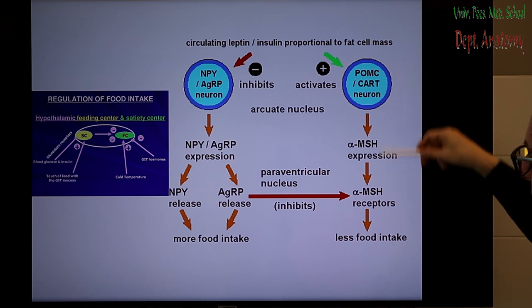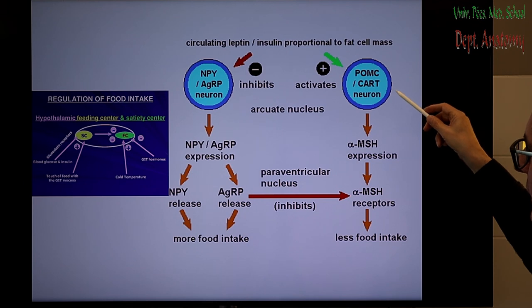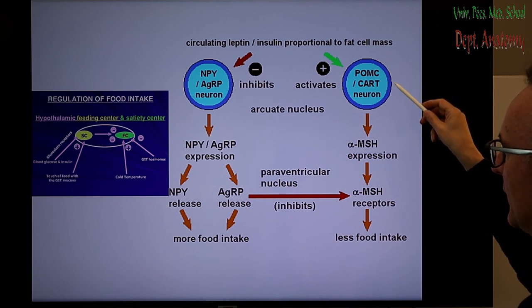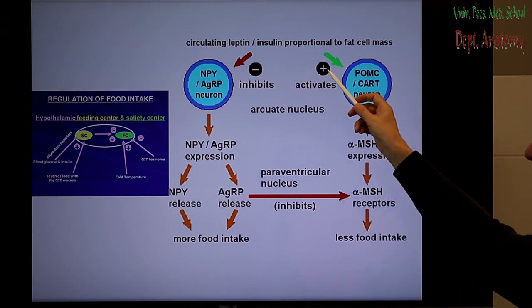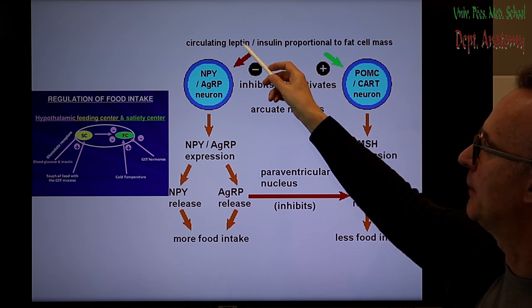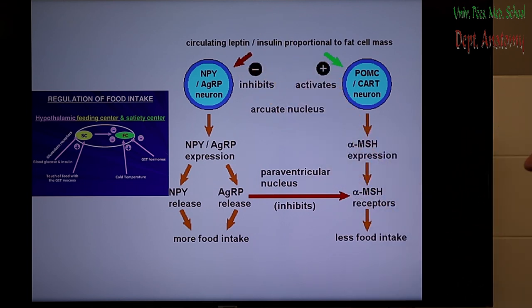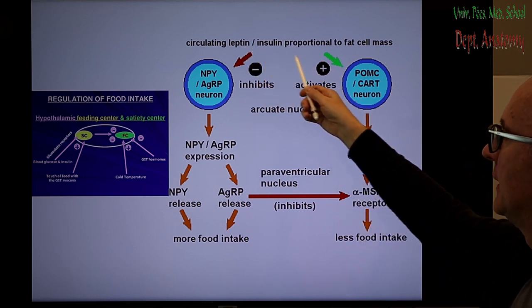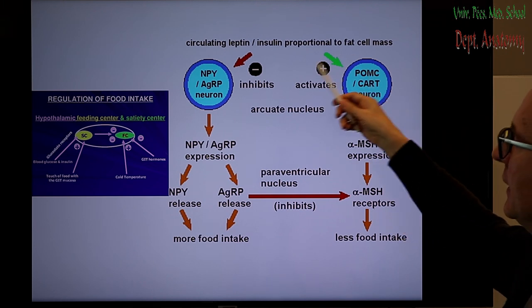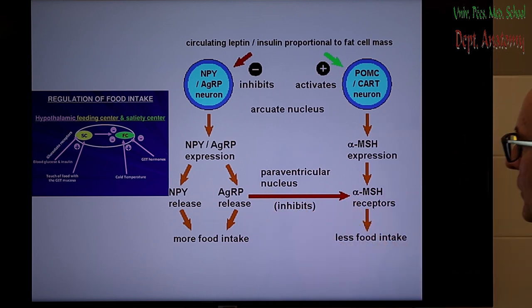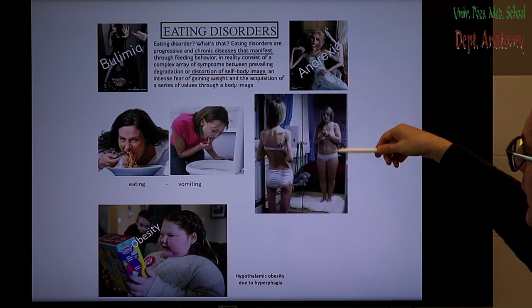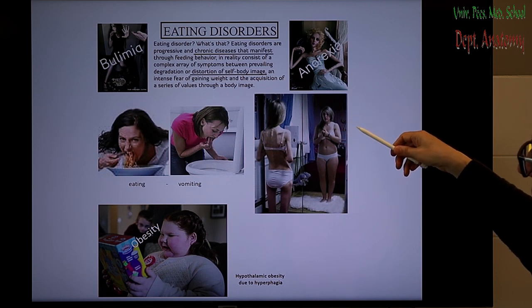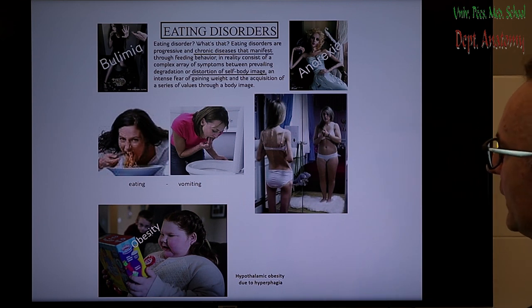The anorexigenic factors decrease food intake — for example POMC, pro-opiomelanocortin, via alpha-MSH. These hormone productions are influenced by insulin release from the pancreas and leptin from the adipocytes. Normally, with sufficient food intake, leptin is released from adipocytes and inhibits further food intake. Disorders in this system can lead to bulimia or anorexia, and a distorted body image belongs to psychiatry.